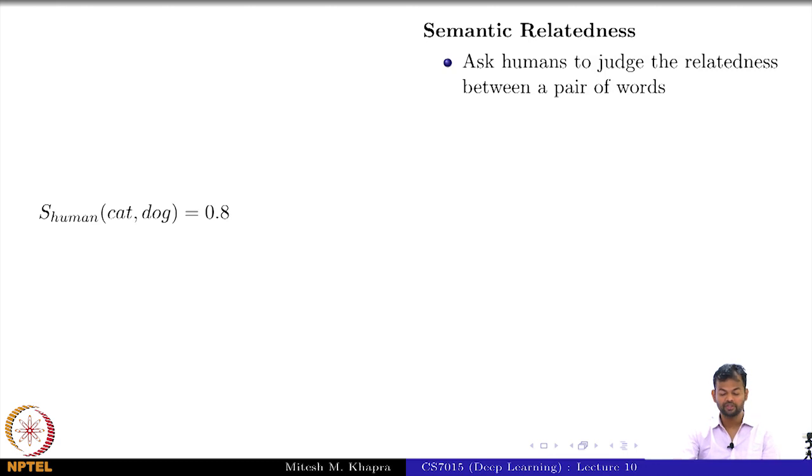Ask humans to judge the relatedness between a pair of words. I construct some pairs of words and show them to a human and ask them how related do you think they are on a scale of 0 to 1. It is likely for cat and dog someone would say 0.8, or at least you would expect values greater than 0.6.